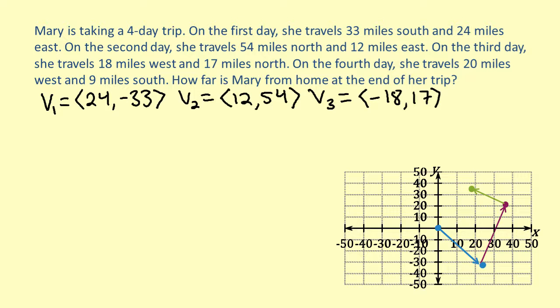For our last vector, we know Mary traveled 20 miles west and 9 miles south on the last day of her trip. So our last vector is going to be -20, -9.